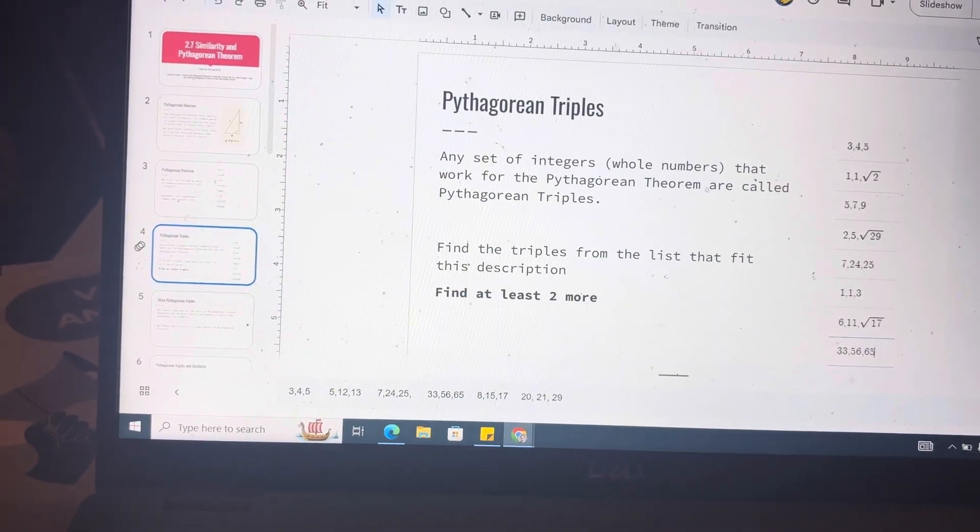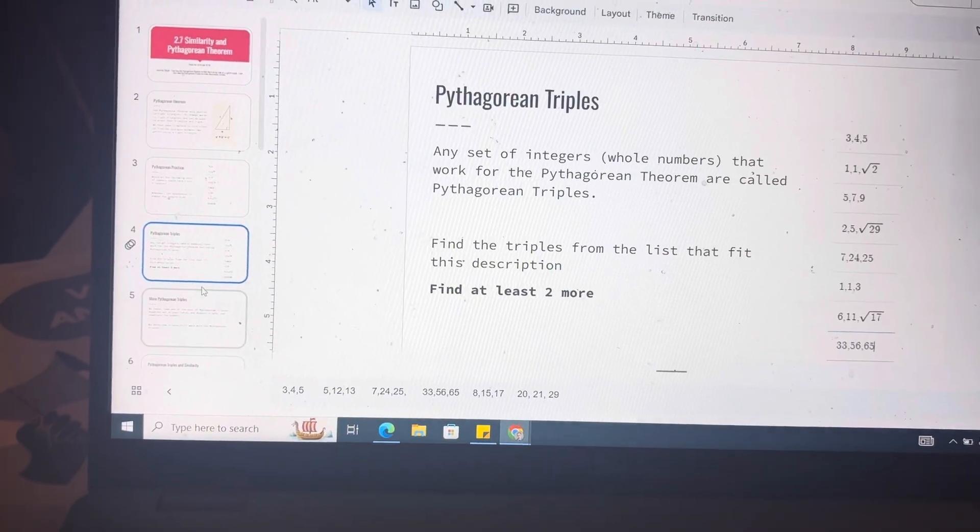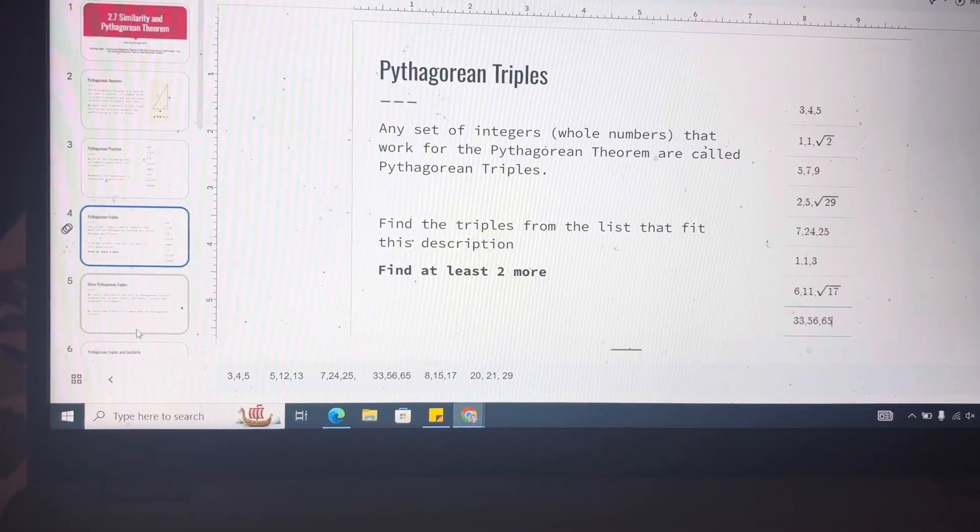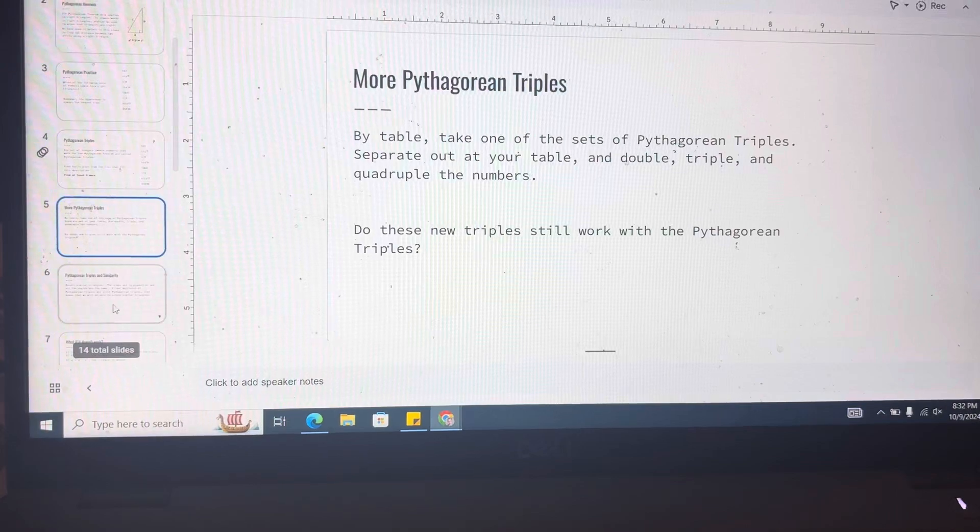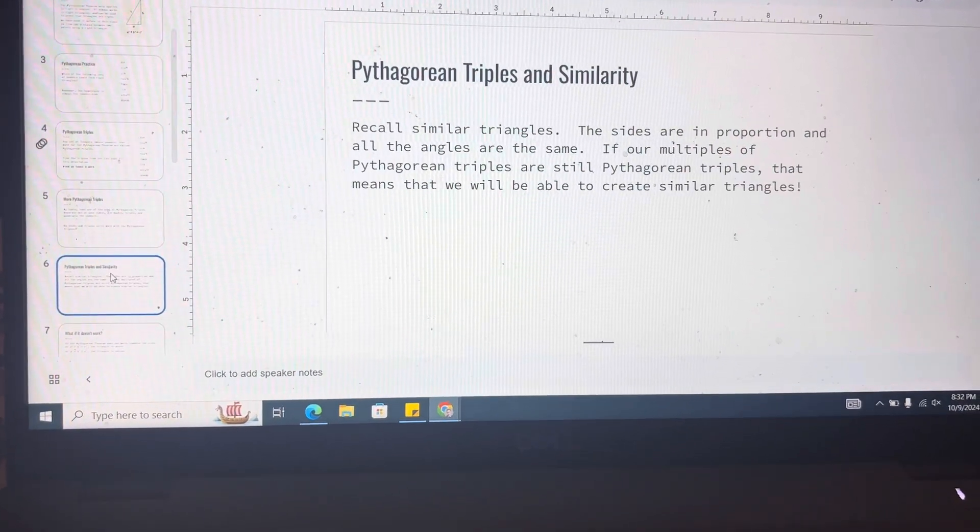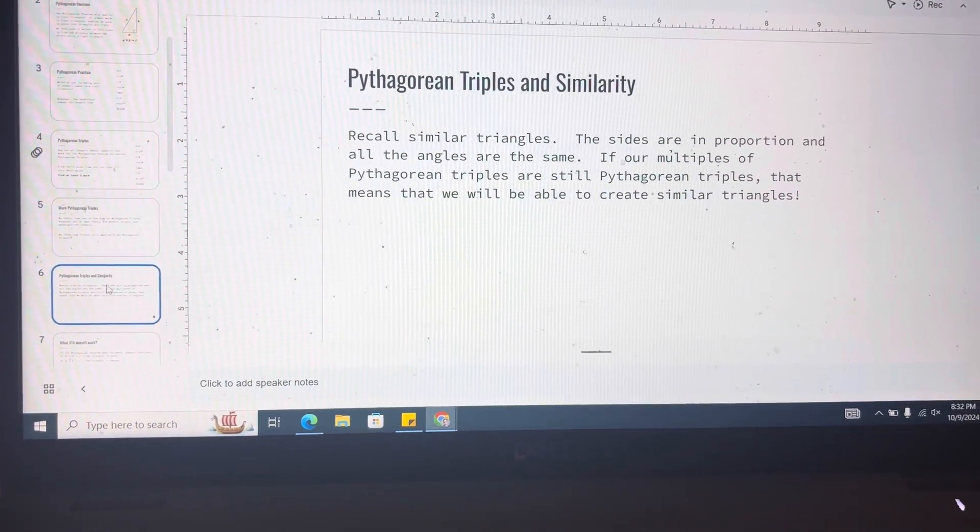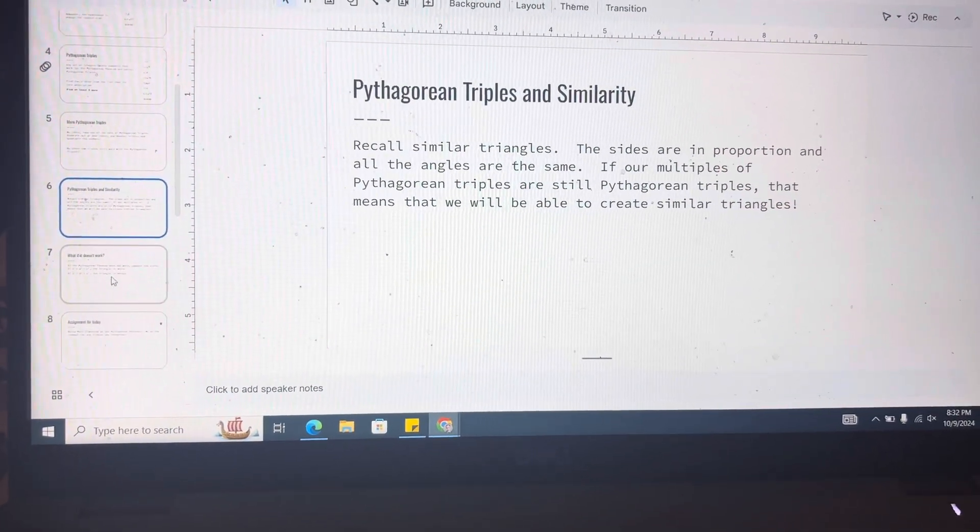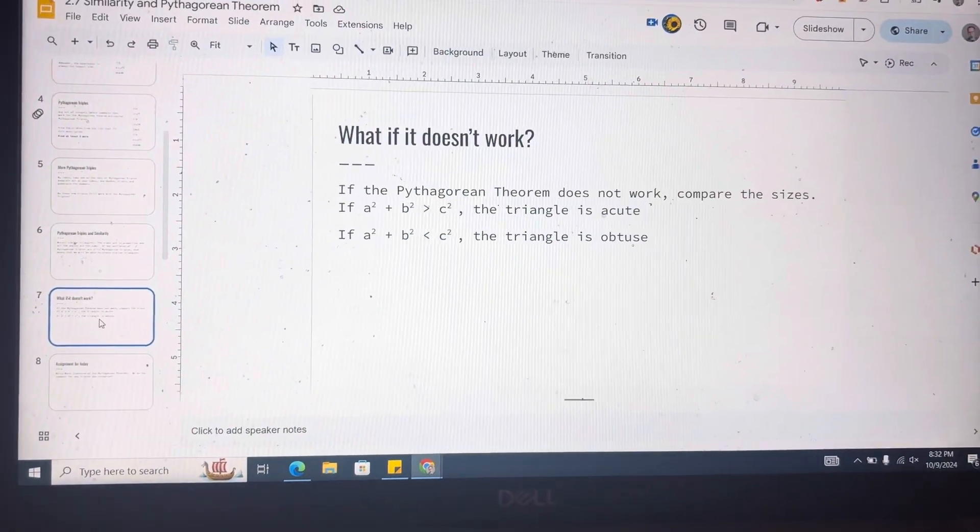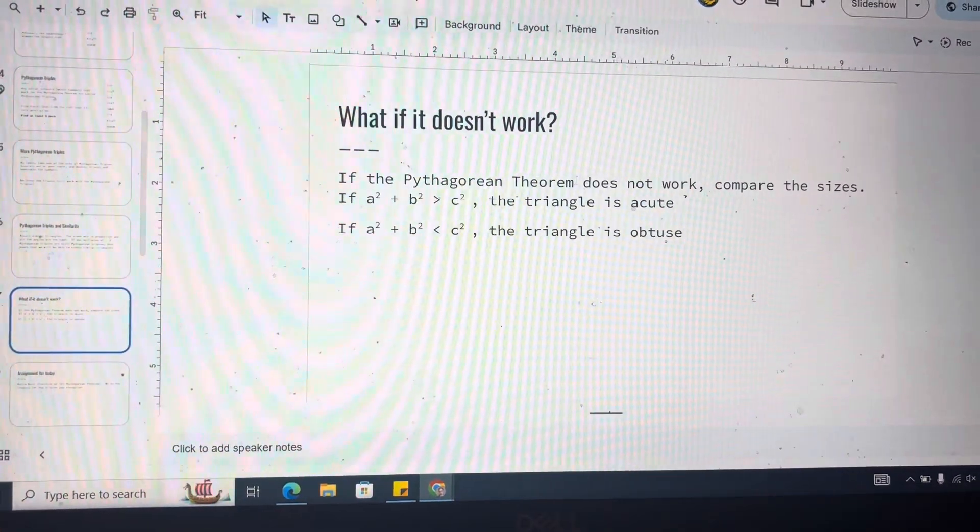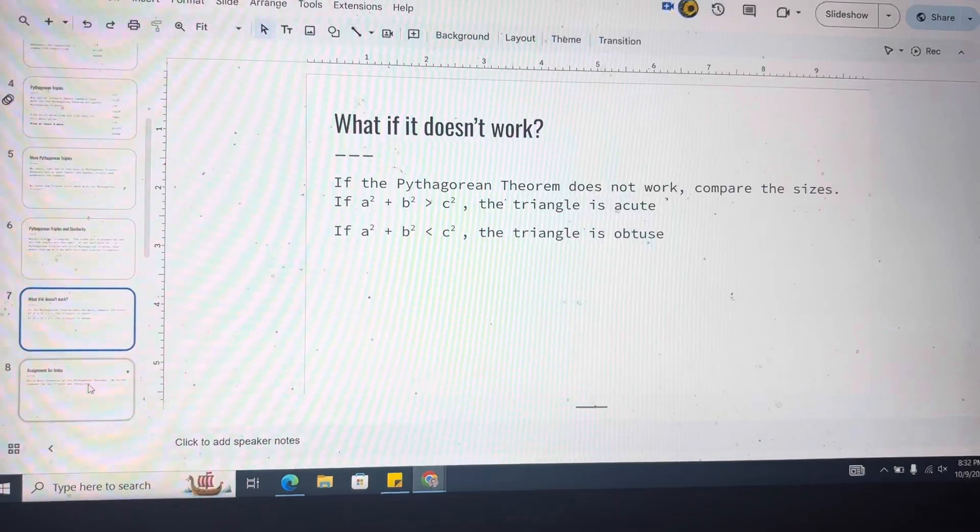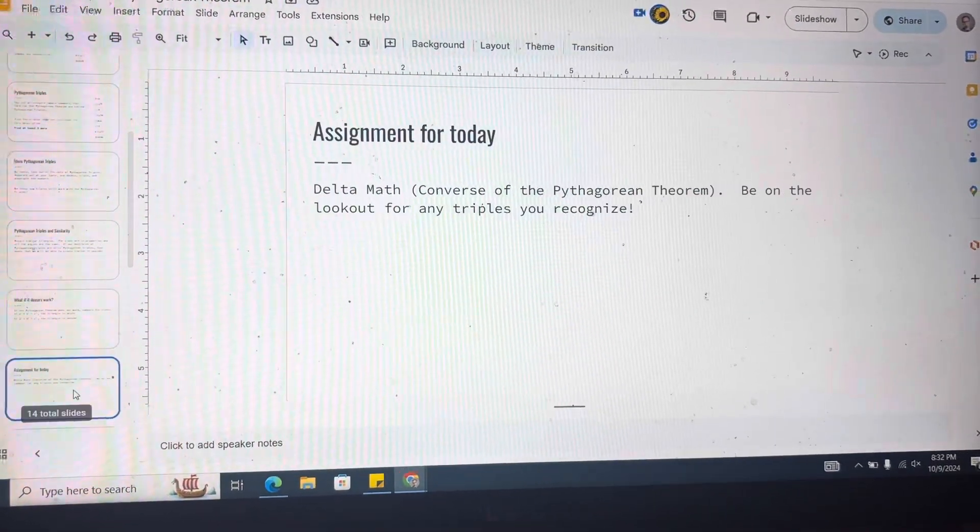And the answer to that is very much yes, we're going to see some more Pythagorean triples from that. So then we had talked about how they make similar triangles, talked about what happens if the Pythagorean theorem does not work, and how you can tell if the triangle is acute or obtuse based on that, and we work some delta math.